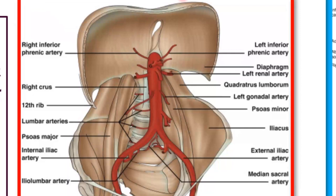The abdominal aorta is actually the continuation of the descending thoracic aorta. The aorta has three parts: the ascending aorta, the arch of aorta, the descending thoracic aorta, and the abdominal aorta. It is located in the posterior abdominal wall as a retroperitoneal organ, supplying all the abdominal organs, with terminal branches running down to the pelvis and lower limbs, and also supplying the undersurface of the diaphragm.